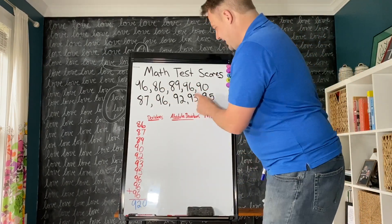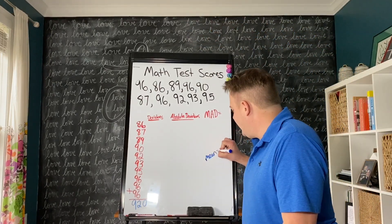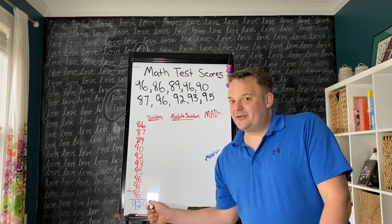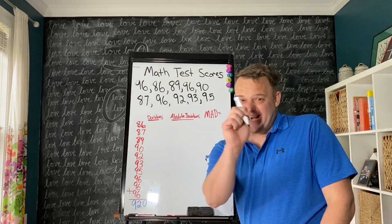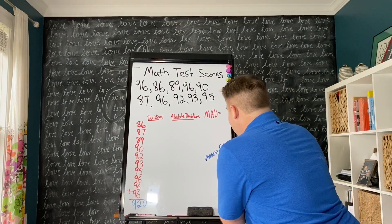Let's count: 1, 2, 3, 4, 5, 6, 7, 8, 9, 10. So there's 10 numbers in the data set. The mean equals 920 divided by 10. That's 92.